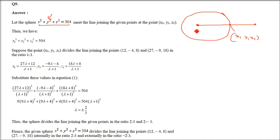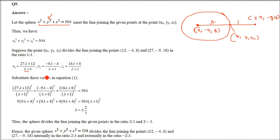Now this point is also dividing this line in the ratio λ:1. So these are the two points. x1 will be (27λ + 12×1) / (λ + 1). y1 is (-4×1 + (-9)×λ) / (λ + 1). z1 is (8×1 + 18×λ) / (λ + 1). Now what we will do? Replace x1, y1, z1 in the original equation x1² + y1² + z1² = 504.